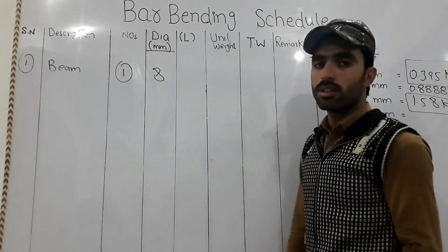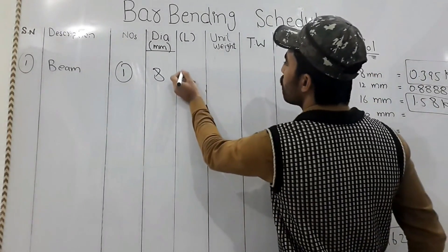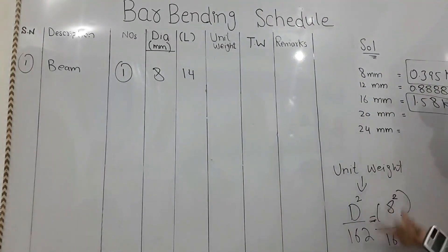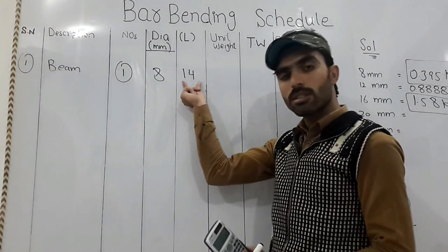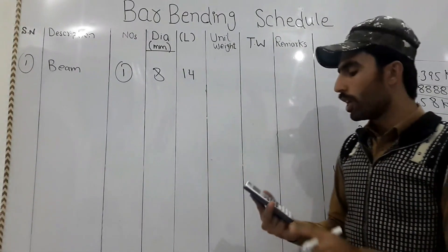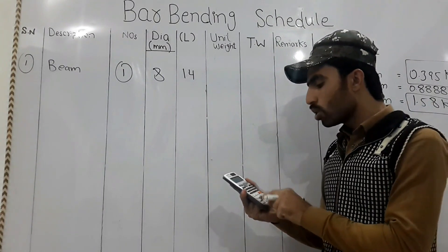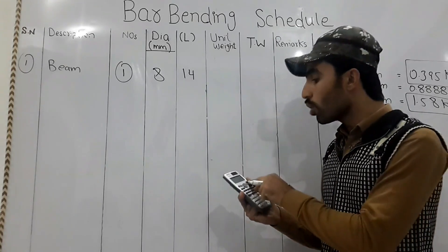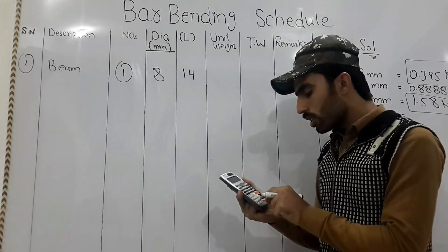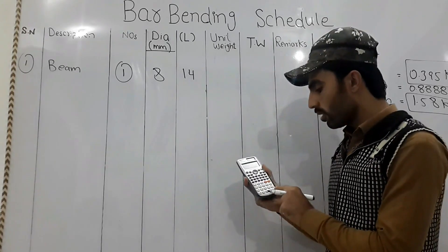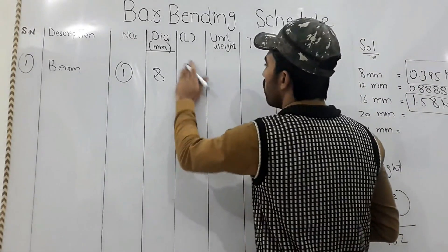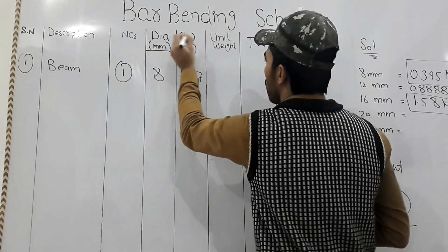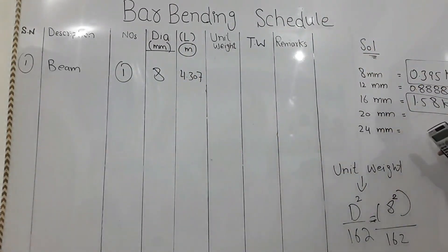So 14 feet — keep in mind all things are in meters here, so I need to convert. Since 3.28 feet equal one meter, we divide: 14 ÷ 3.28 = 4.307 meters. The unit weight for 8mm steel is 0.395 kg per meter.